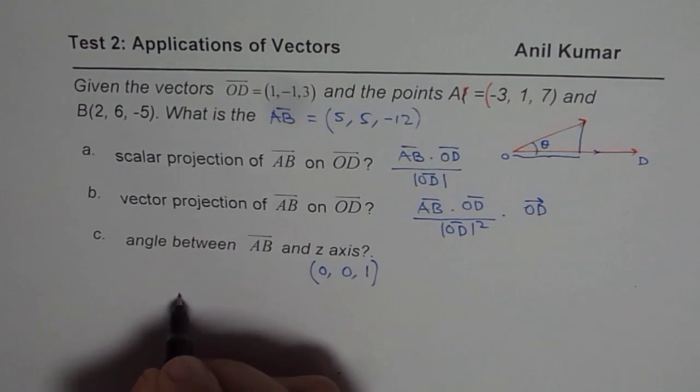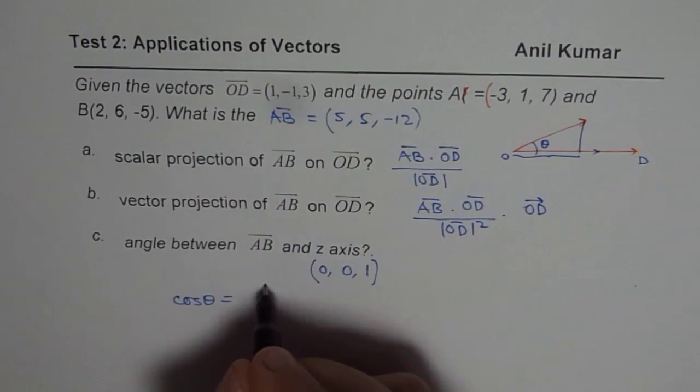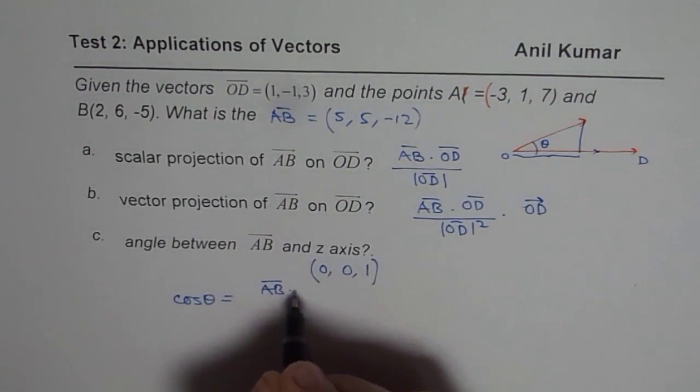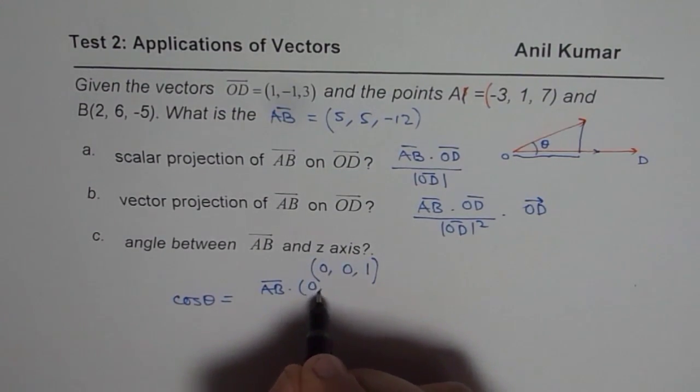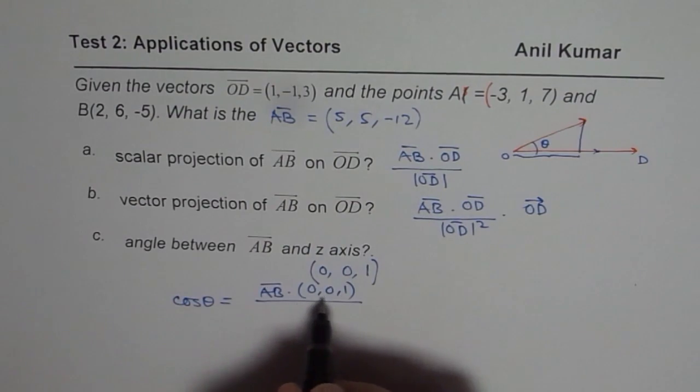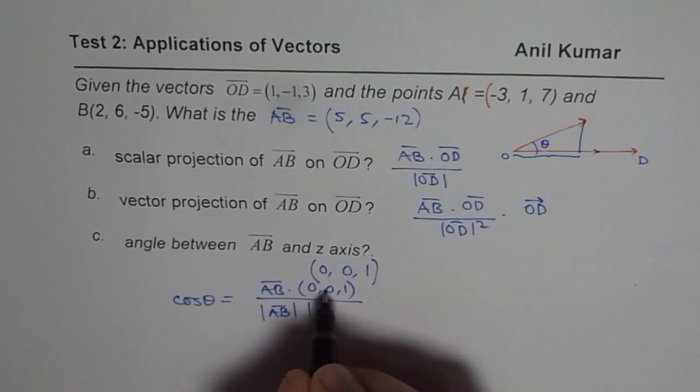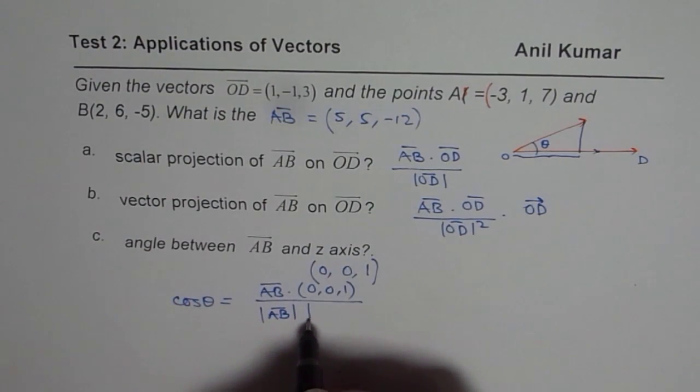So we know cos θ is equal to the dot product of AB with this (0, 0, 1) divided by the magnitude of these two. So the magnitude of AB times the magnitude of this vector, let me write this as square root of 1.